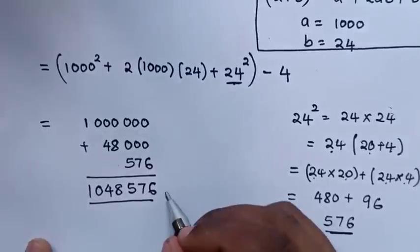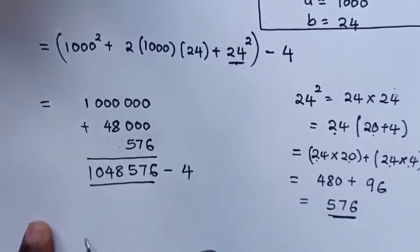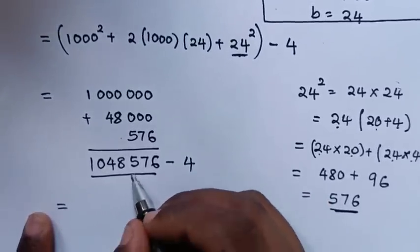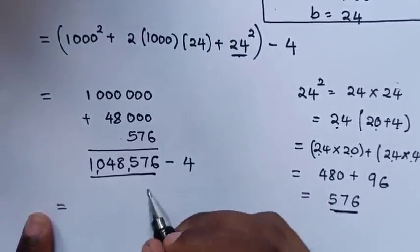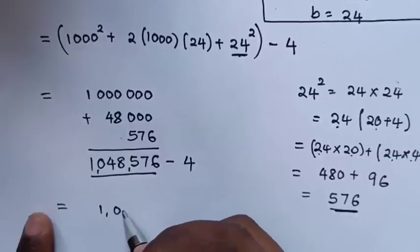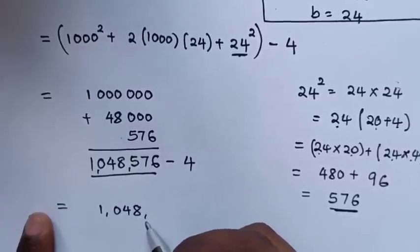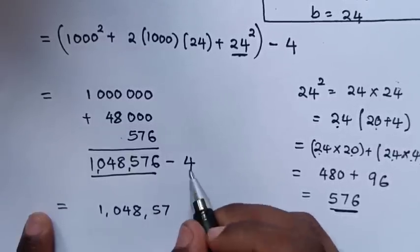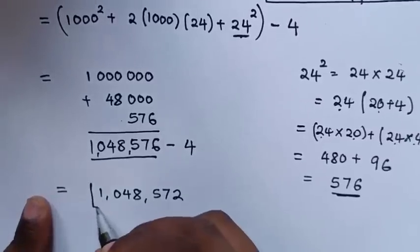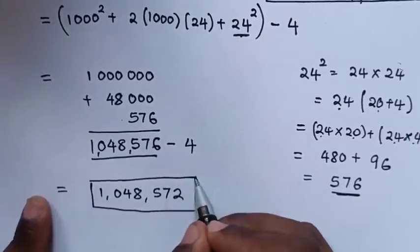Then minus 4. So here we subtract 4, then it will equal 1,048,572. This is the final answer.